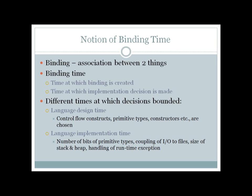The second type is language implementation time. Once you have decided the design-level features of a language, the next step is to implement it. For example, if you are using int, what is the size of int? If you are using float, what is the precision of floating point numbers? All those decisions are examples of language implementation time bindings.